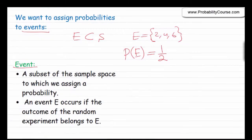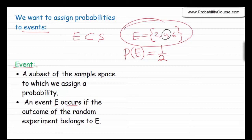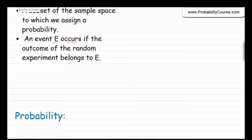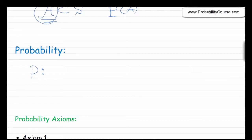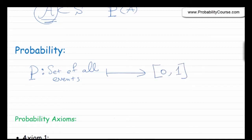An event E occurs if the outcome of the random experiment belongs to E. So if I define event E and I roll a die and the outcome turns out to be 4, I say that event E has occurred. Probability is a function that assigns a real value to subsets of the sample space. It's a function from the set of all events to real numbers — or more precisely, probabilities are always between 0 and 1, so it maps to real numbers between 0 and 1.